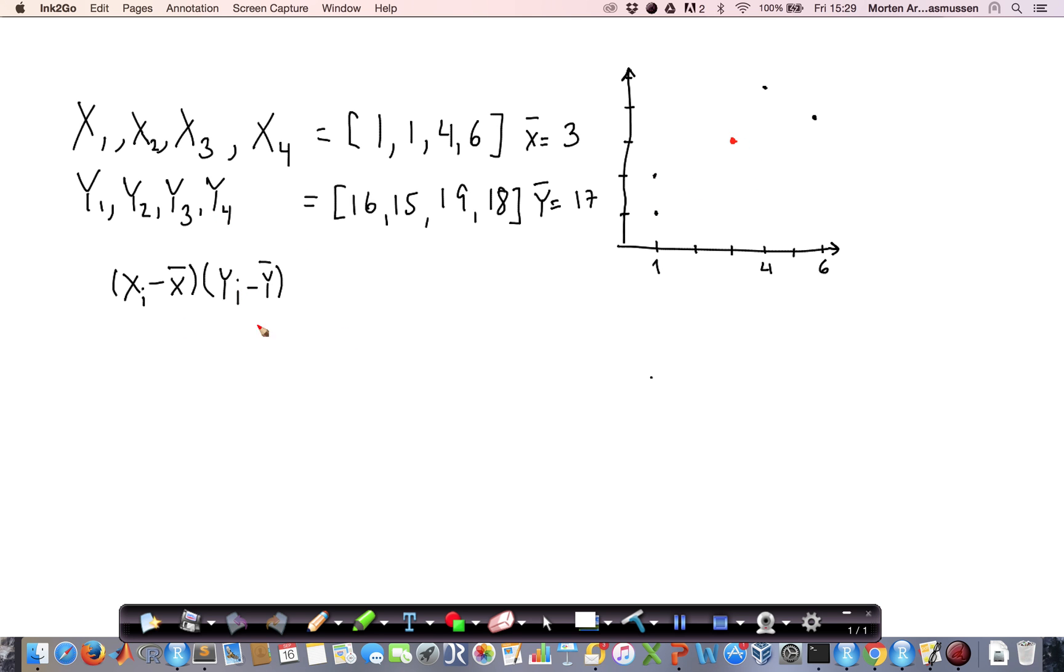Then the equation says that we take for each element the distance to the center. That's this distance in x and this distance in y, and we take the product of these, which basically means that we have this rectangle. What we get is four rectangle areas, and we see that these are the ones we deal with in order to calculate the covariance.